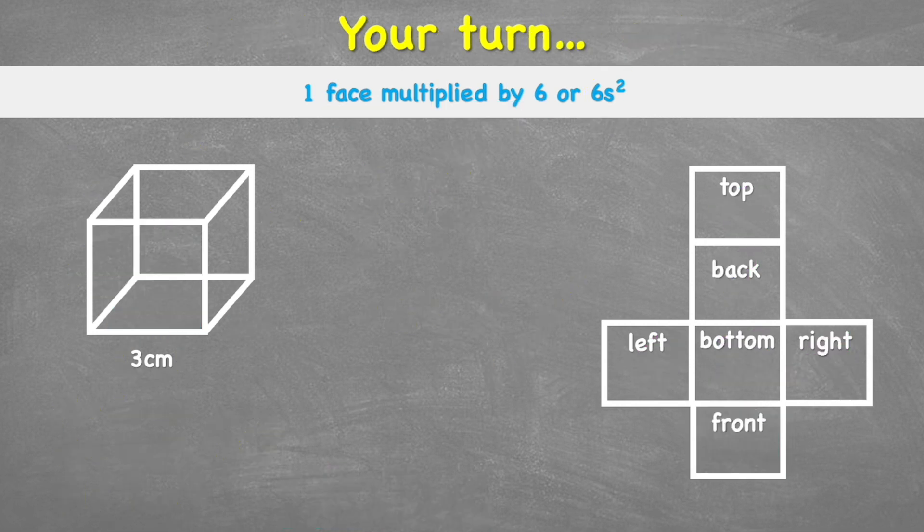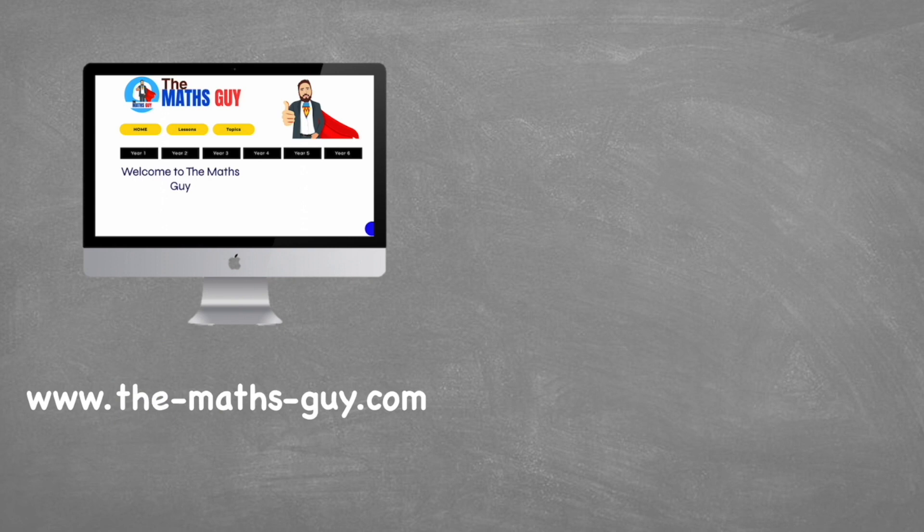Your turn. Have a go at working out the total surface area of this square. Instead of using three centimeters, I'm going to say this is now five centimeters. Good luck. Press pause on the video. Put your answer in the comments section.